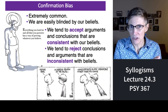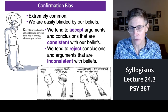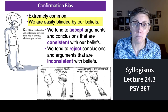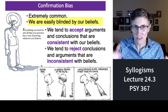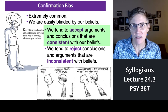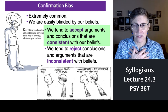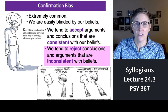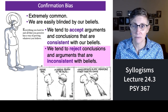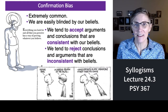To review, we have something called confirmation bias — it's actually an umbrella term, and there are a lot of different biases that fall under it. But we are essentially blinded by our own beliefs. This is part of the reason we're in such a mess right now in the US. We tend to accept arguments and conclusions if they conform to our beliefs, and we tend to reject conclusions and arguments that are inconsistent with our beliefs. We do it without even knowing it, and that leads us into a whole lot of trouble.